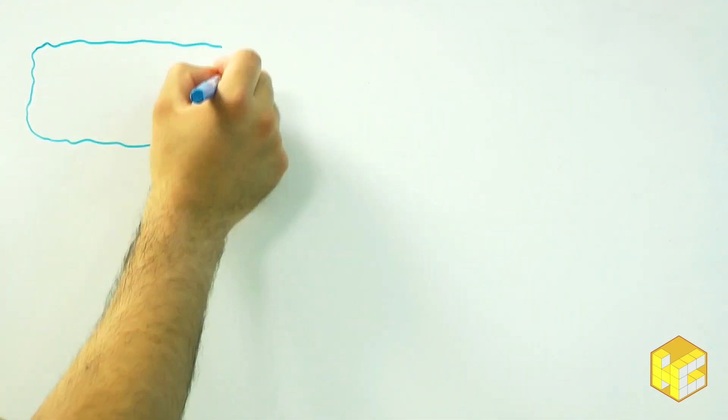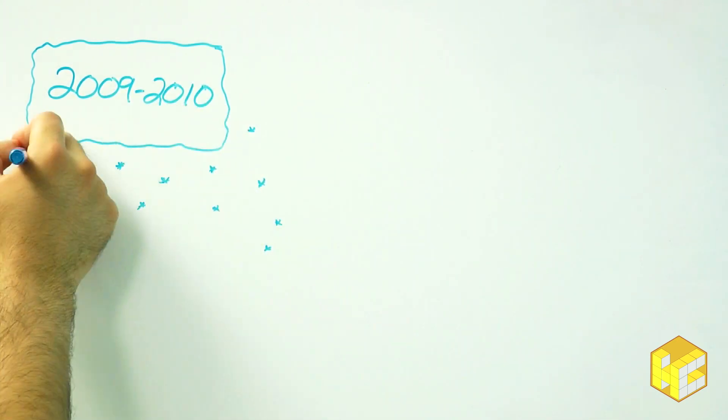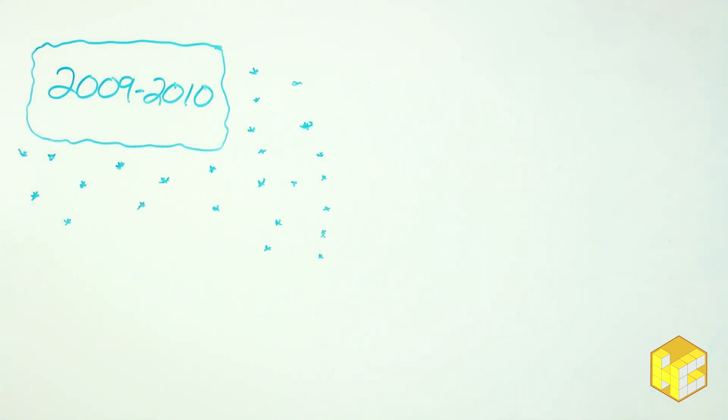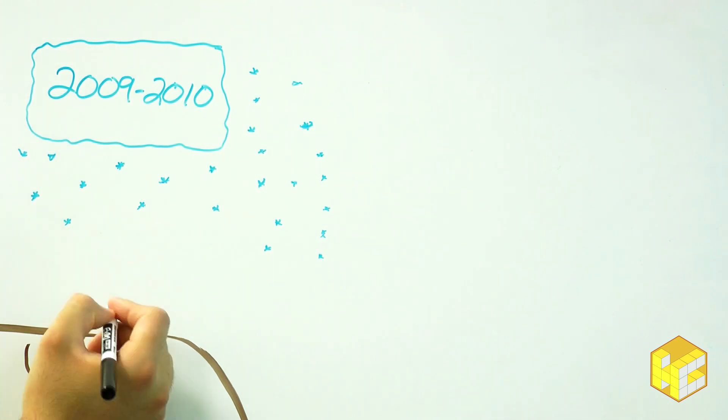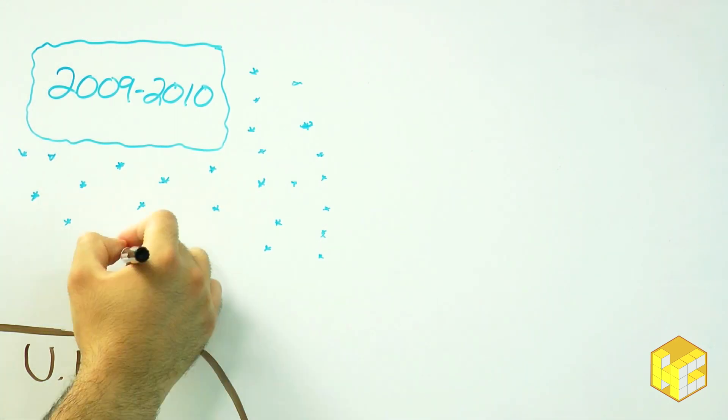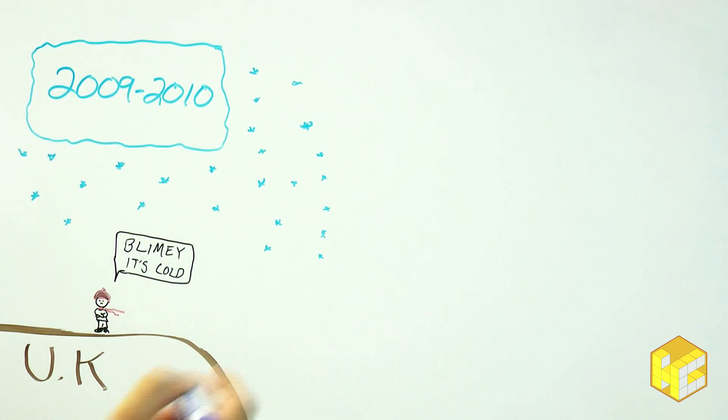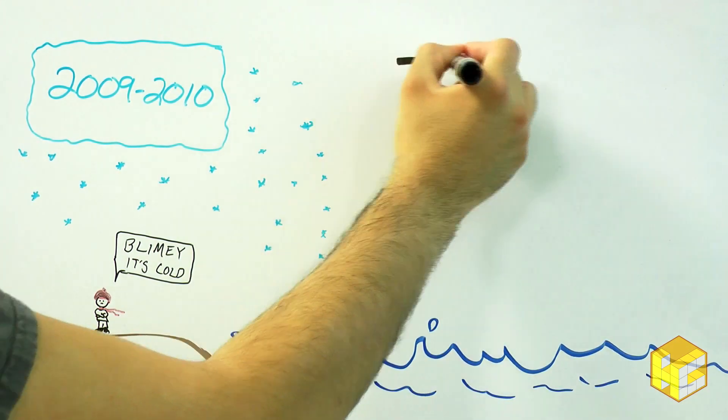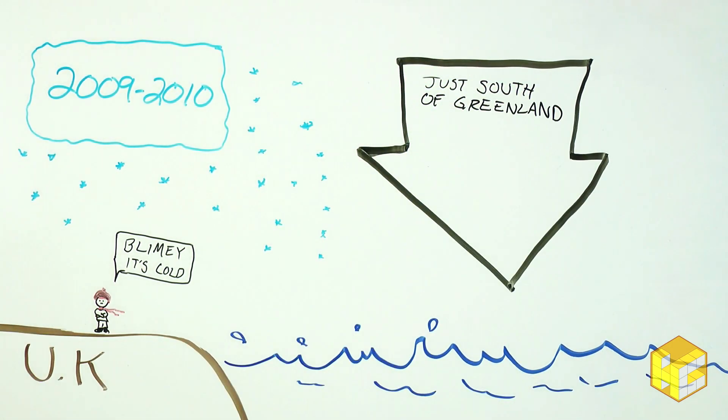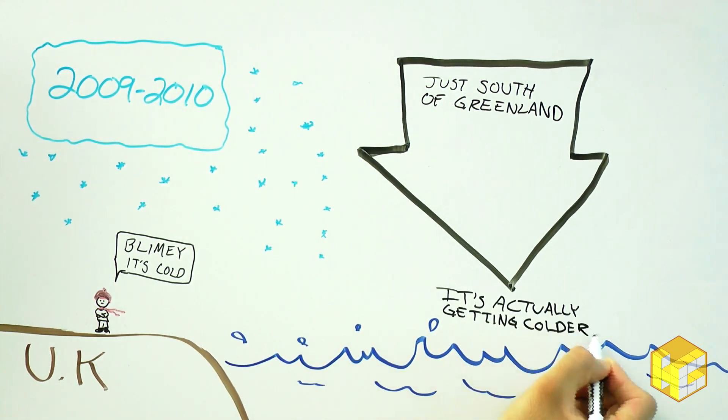We have seen changes in the current affect the climate. In the 2009-2010 season, the AMOC was at its slowest, and the result was the coldest year the UK had experienced since 1980. What's more, a spot in the North Atlantic, just south of Greenland, is one of the few spots on Earth that's actually cooling, and that spells trouble for our dear friend the AMOC.